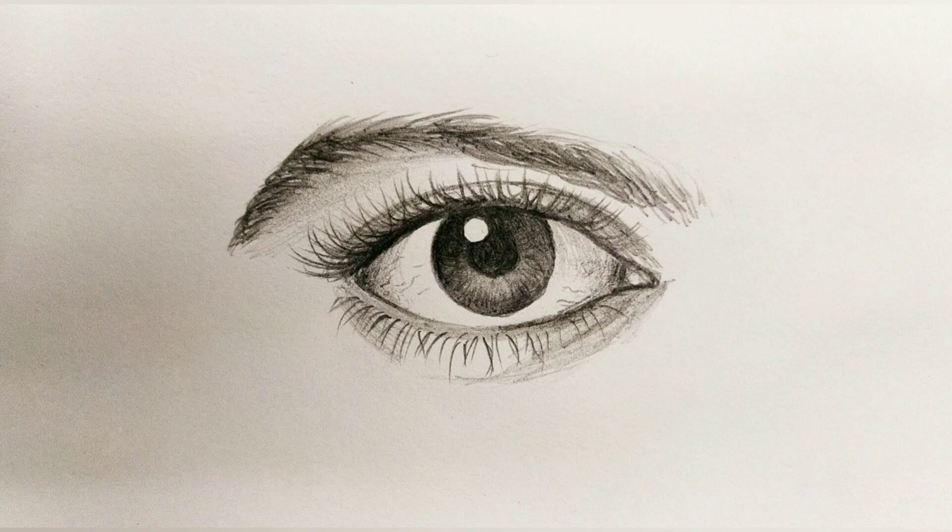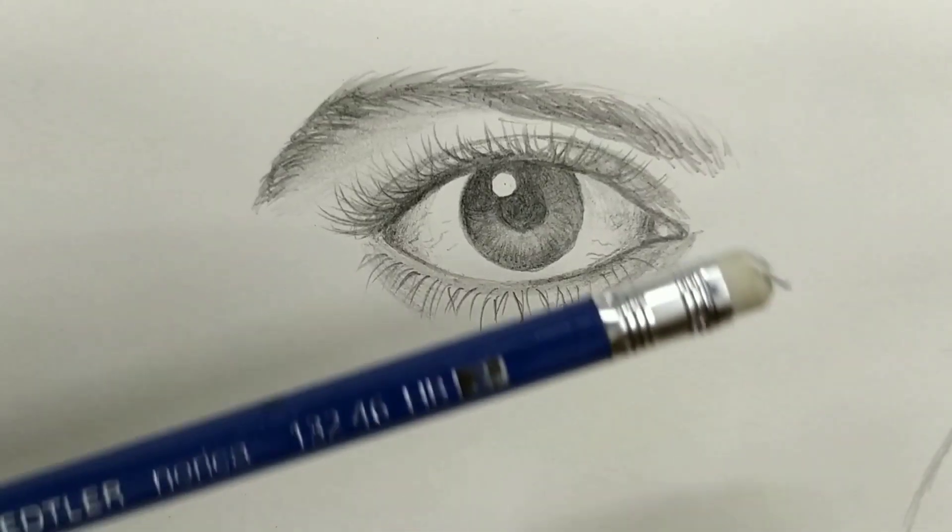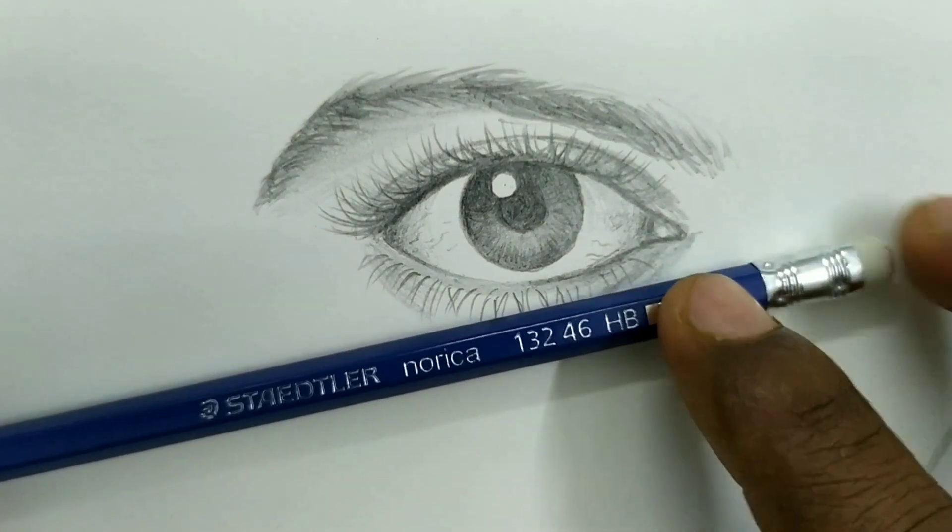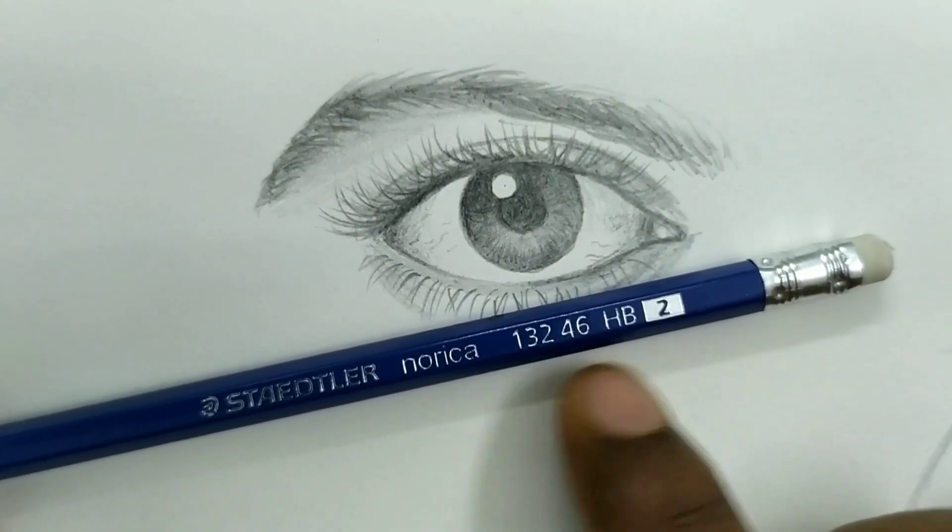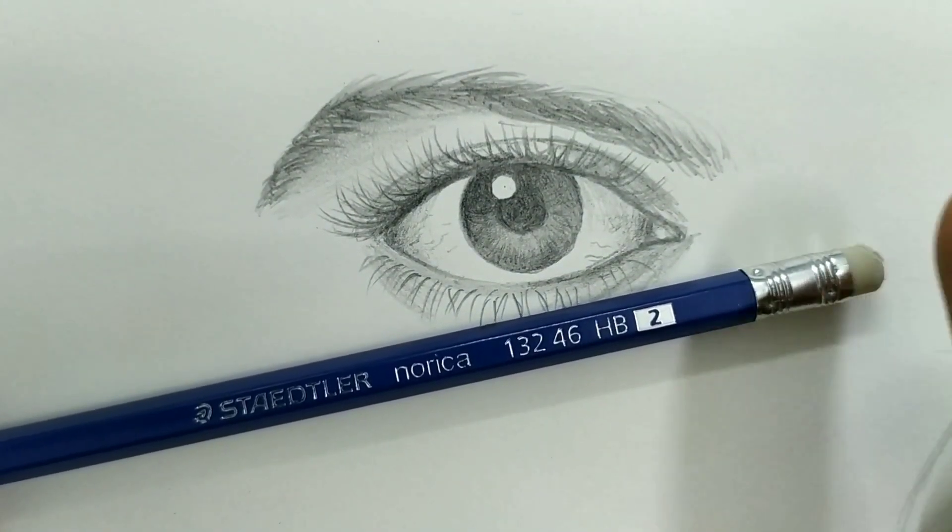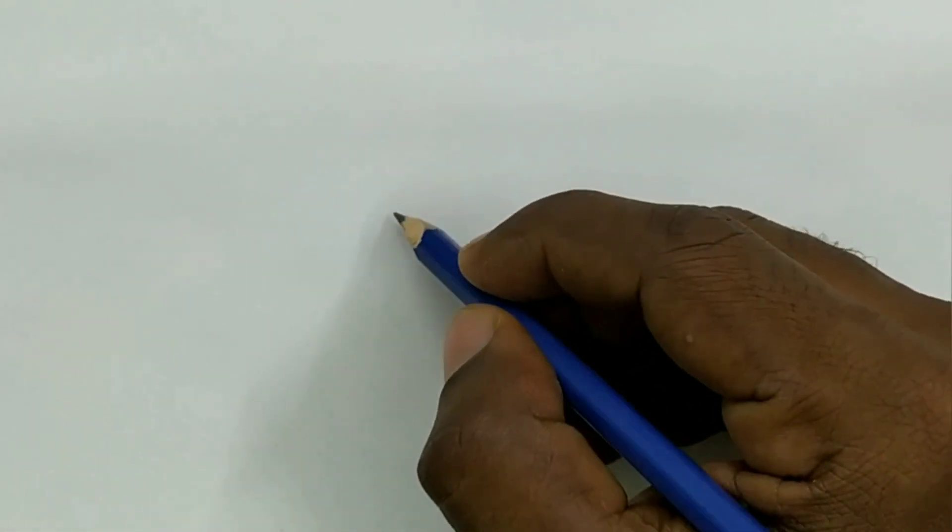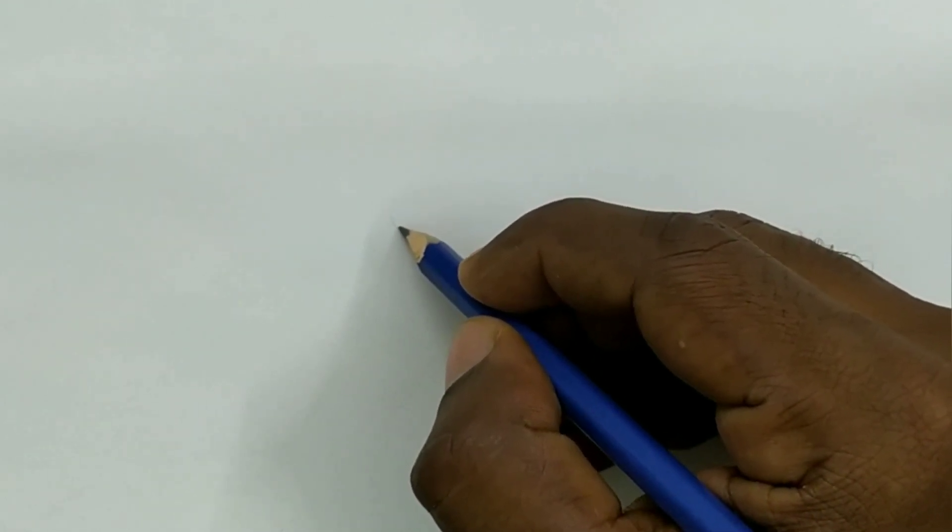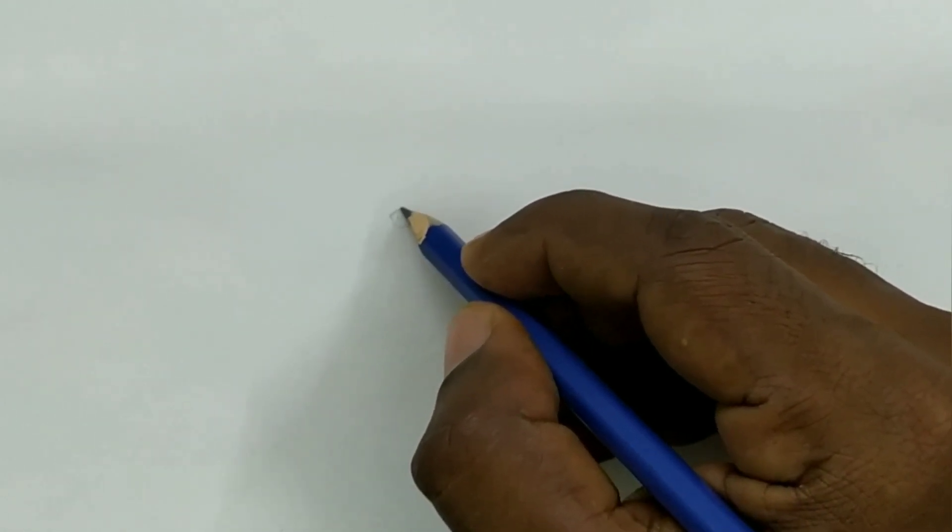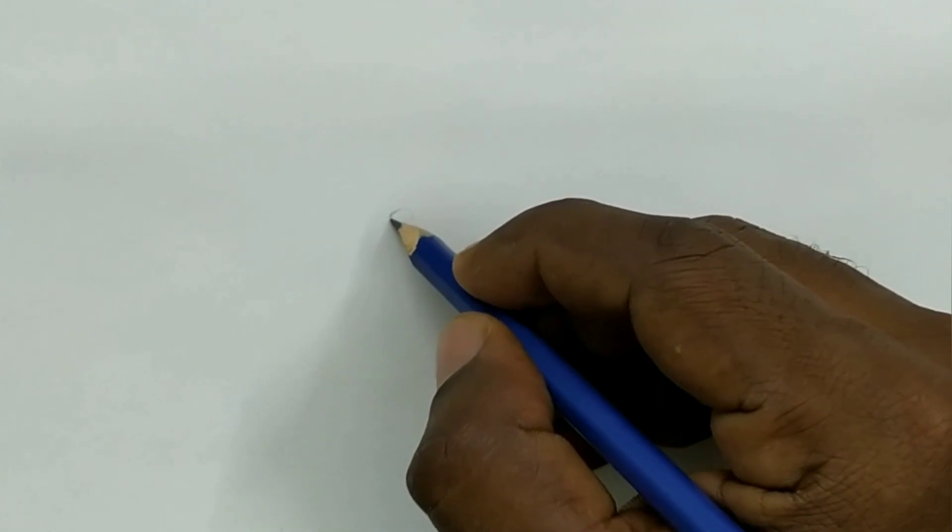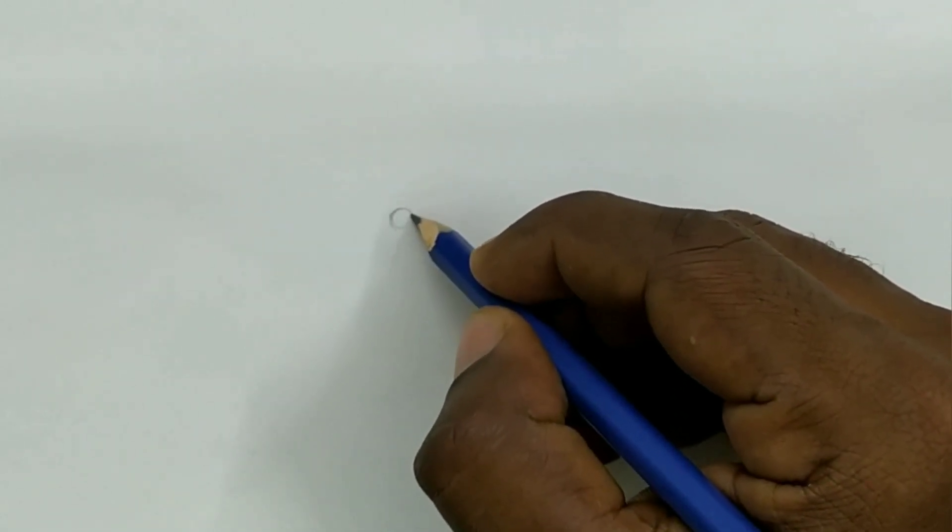Today I am going to teach how to make a human eye using Staedtler Pencil HB with eraser. First of all we will make a small circle. Always remember that never apply too much pressure on the paper.